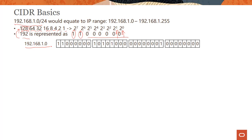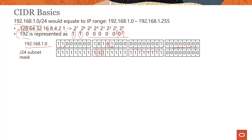To represent 192.168.1.0 in binary: for 192 the first two bits are 1; for 168 you need 128 plus 32 plus 8, giving 10101000; 1 is represented with the last bit set; and 0 is all zeros. When we talk about /24 subnet mask, it means you turn all network bits to 1 — the first three octets are all ones — so 8+8+8 = 24 bits, which is the /24 subnet mask.